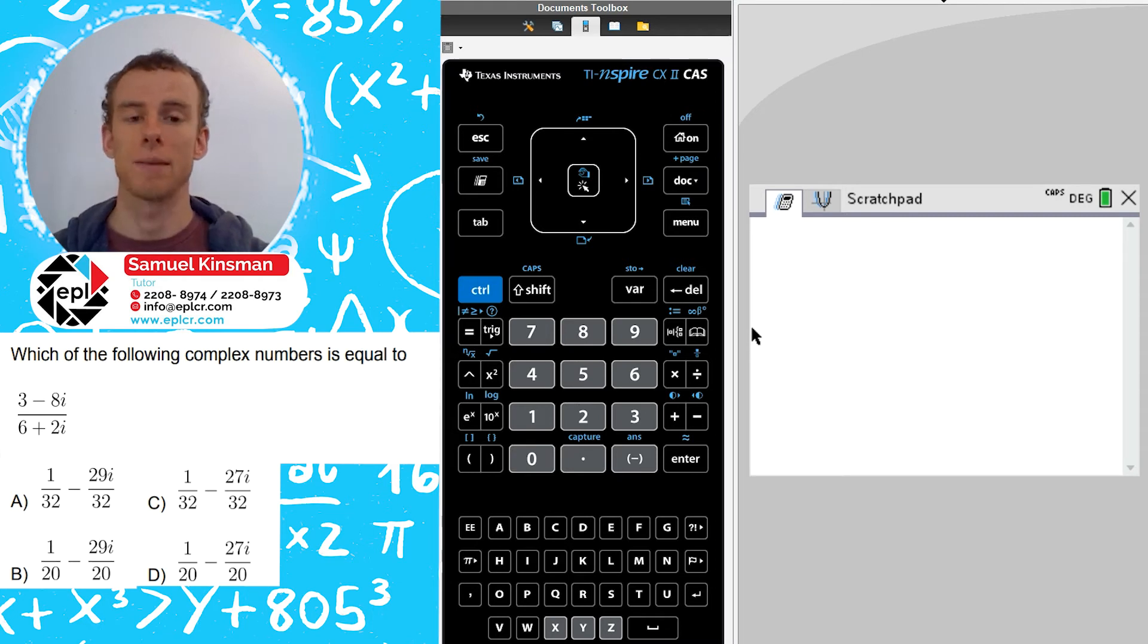We're just going to start by typing in the expression. We'll press control and then the division button just so that we get the two fraction boxes. And then on top, we've got 3 minus 8i.